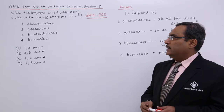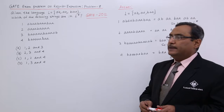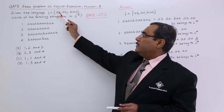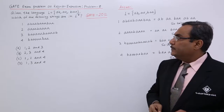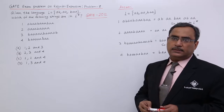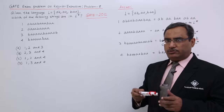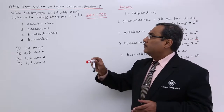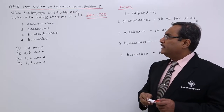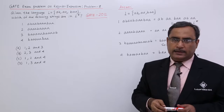Given the language L is equal to {ABA, ABAA, BAA} — three strings are given over A and B. We need to determine which of the following strings are in L star. L star means I shall be constructing strings using these possible given strings, which are ABA, ABAA, and BAA.